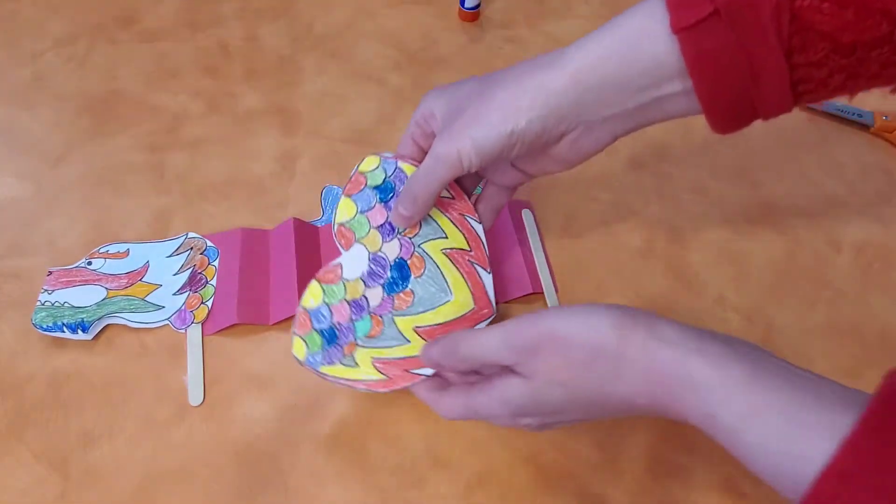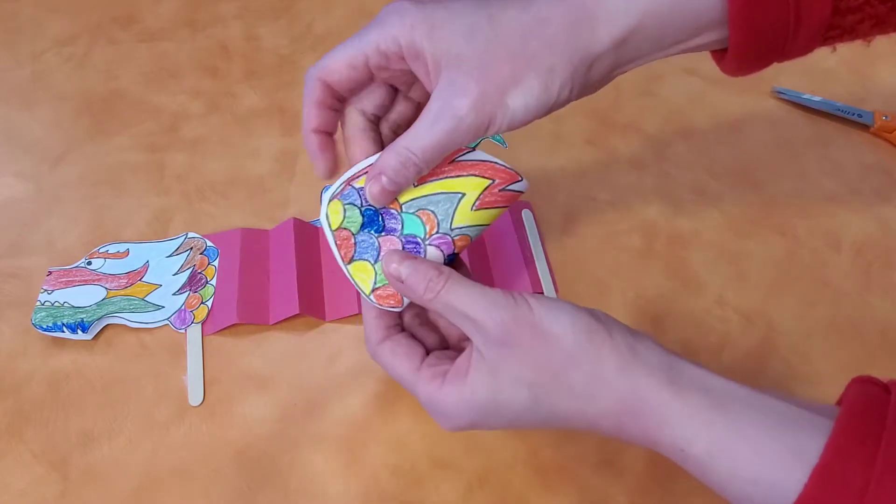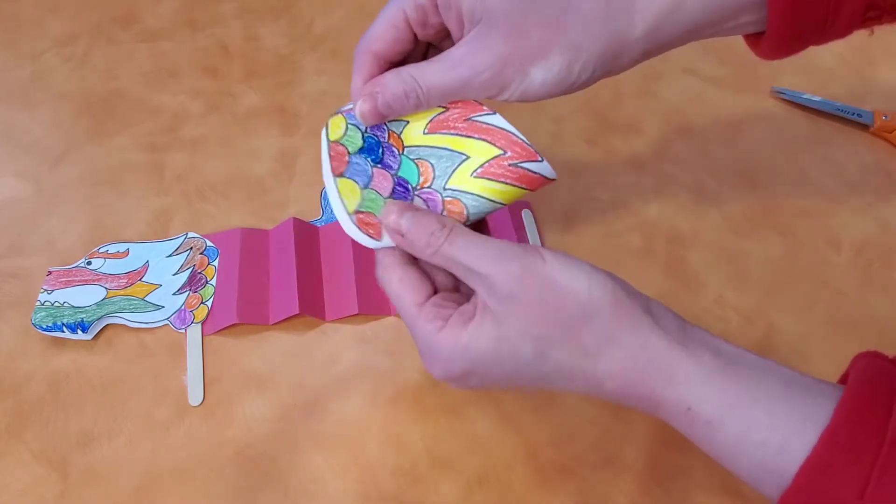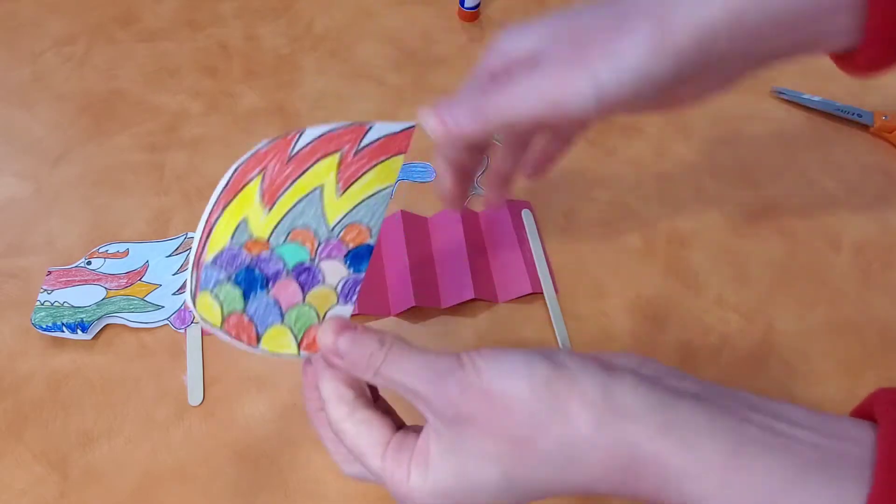And then take this, you fold it in half. That's going to be the end of the dragon, the dragon's tail.